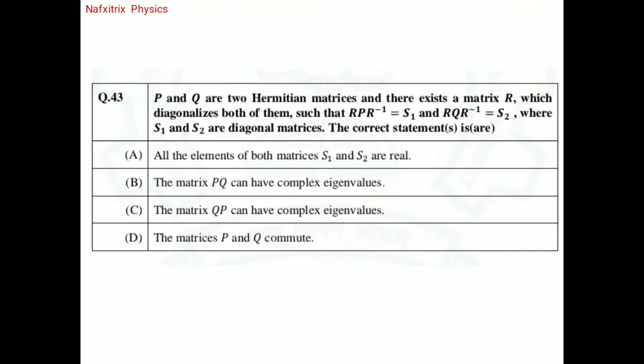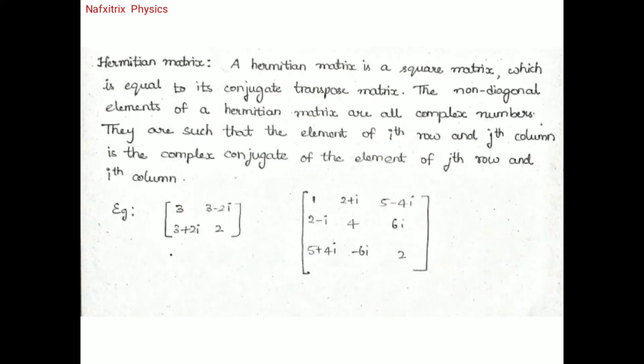S1 and S2 are diagonal matrices because R is diagonalizing P and Q. We need to find out which statements are correct. Before that, let's review what a Hermitian matrix is.